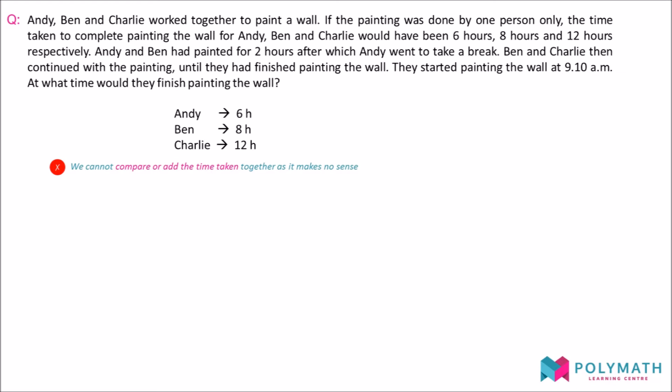We can use this information if we find the rates of painting of each person. That is why we call this question a productivity question as different people have different productivity and thus can work at different rates. Since Andy can paint 1 wall in 6 hours, his productivity is 1 over 6 wall per hour, which is derived from taking 1 wall and dividing it by 6 hours. Likewise, Ben's productivity is 1 over 8 wall per hour and Charlie's productivity is 1 over 12 wall per hour.